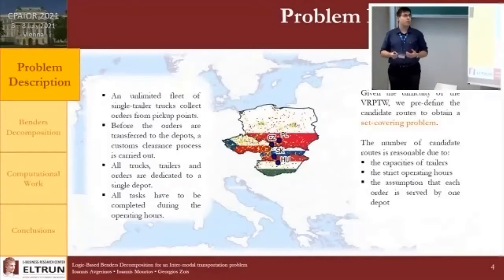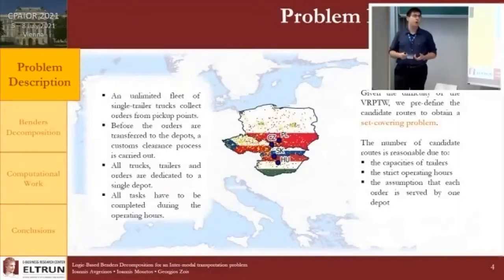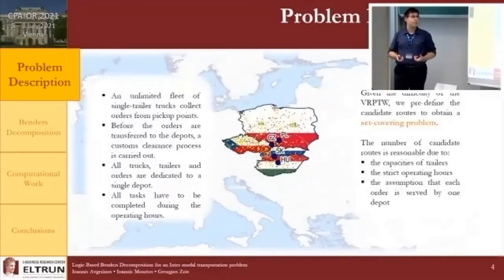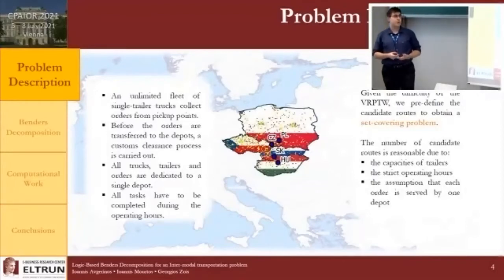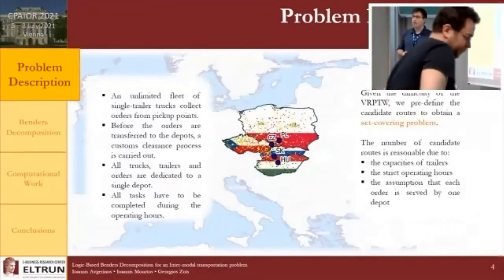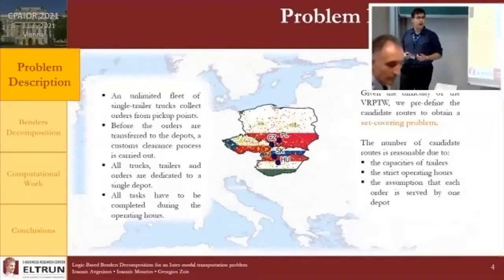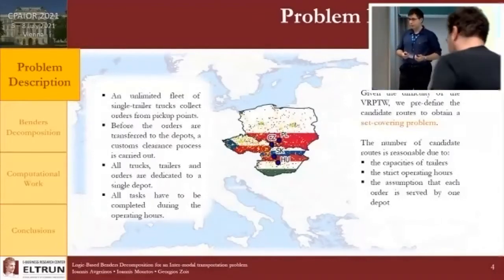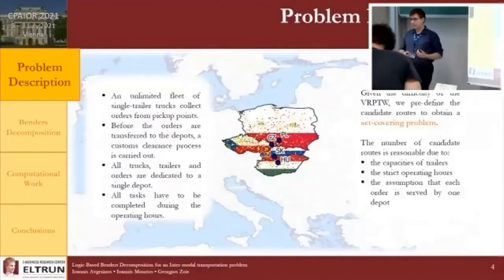Given the difficulty of this problem, we opt for a pre-processing step in which we pre-compute candidate routes to obtain a set-covering problem that can be solved more easily. The number of candidate routes is manageable thanks to the tight capacity of trailers, strict operating hours, and the assumption that each order will be served by exactly one vehicle.